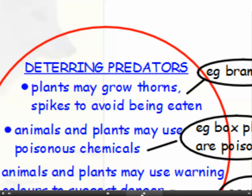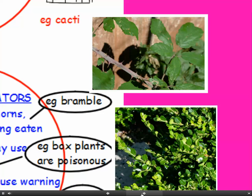Living organisms may also have adaptations to deter predators and stop being eaten. Plants, for example, may grow thorns or spikes — for example, brambles. Animals and plants may also use poisonous chemicals to avoid being eaten. For example, box plants, which you might find in your garden as part of a hedgerow, are poisonous. Here's bramble — look at the size of those spikes; that'll stop them being eaten. And box plants are poisonous, which will stop them being eaten too.